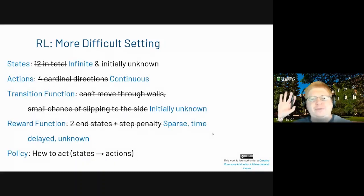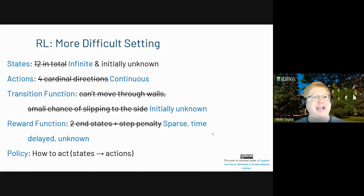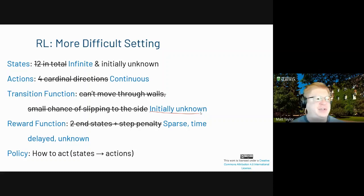That was a very simple RL setting. Let's make things more interesting. Instead of 12 states, we could have an infinite number of states. You could also have continuous actions — when operating a robot, you typically have torques rather than discrete up/down/left/right. Maybe you don't know the transition function, maybe you only get the reward at the very end, maybe it's randomized. And we've still got to learn this policy.